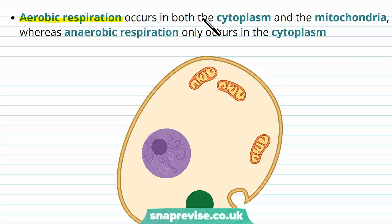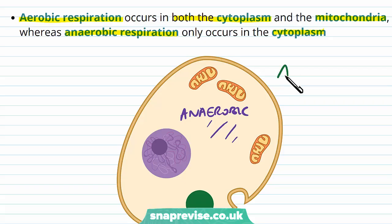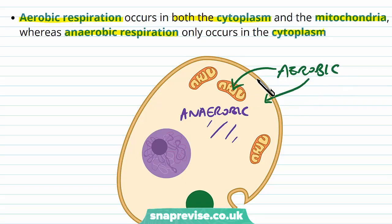Aerobic respiration occurs in both the cytoplasm and the mitochondria because there are different steps, whereas anaerobic respiration is only limited to the cytoplasm. So anaerobic has a particular pathway and only happens in the cytoplasm, whereas aerobic has steps in both the cytoplasm and in the mitochondria.